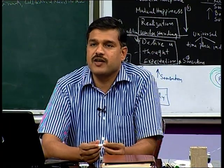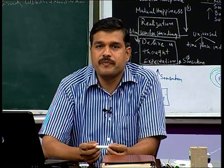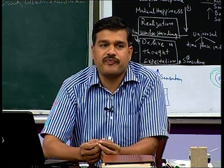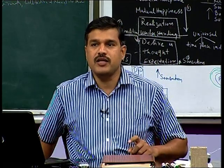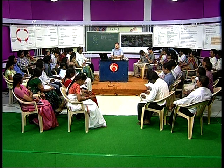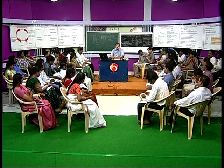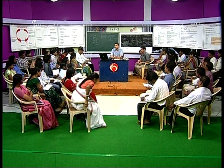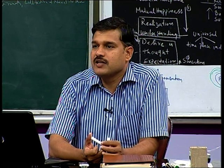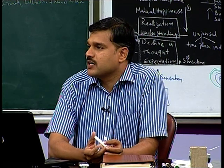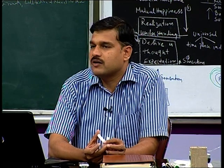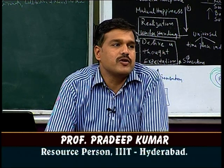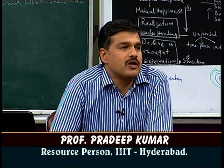Welcome to session 5 of day 4. Let us continue the discussion. We started the discussion on harmony in nature. In harmony in nature, I have described there are 4 entities: one is material order, second one is pranic order, third one is animal order, fourth one is human order.